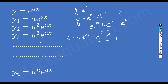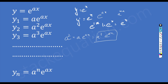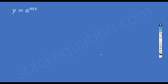Because if you observe, the exponent of a is equal to the order of differentiation. For example, when differentiating for the third time the exponent of a is 3, and e to the power ax remains. We can use a similar approach to find the nth derivative of y equals a to the power mx.